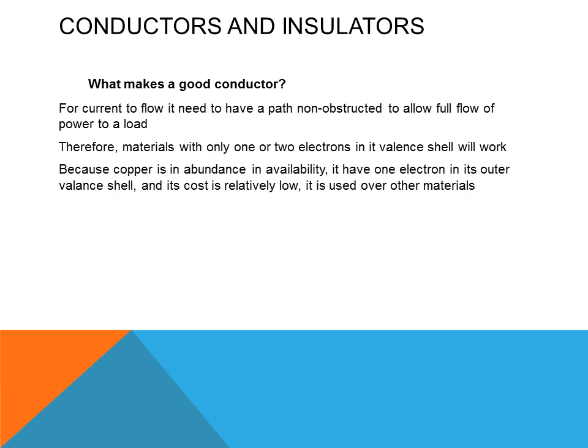For current to flow, it needs to have an unobstructed path to allow full flow of power to the load. Materials with only one or two electrons in their valence shell will work as conductors. Copper is abundant and has one electron in its outer valence shell, with relatively low cost. Therefore, copper is one of the best conductors used because of its low cost and abundance.